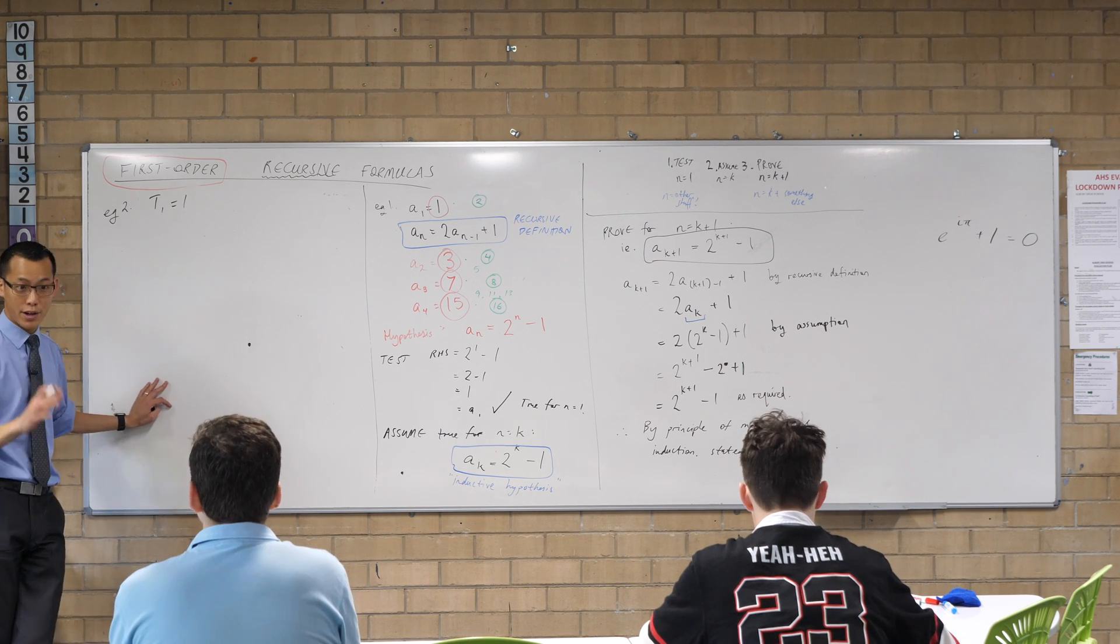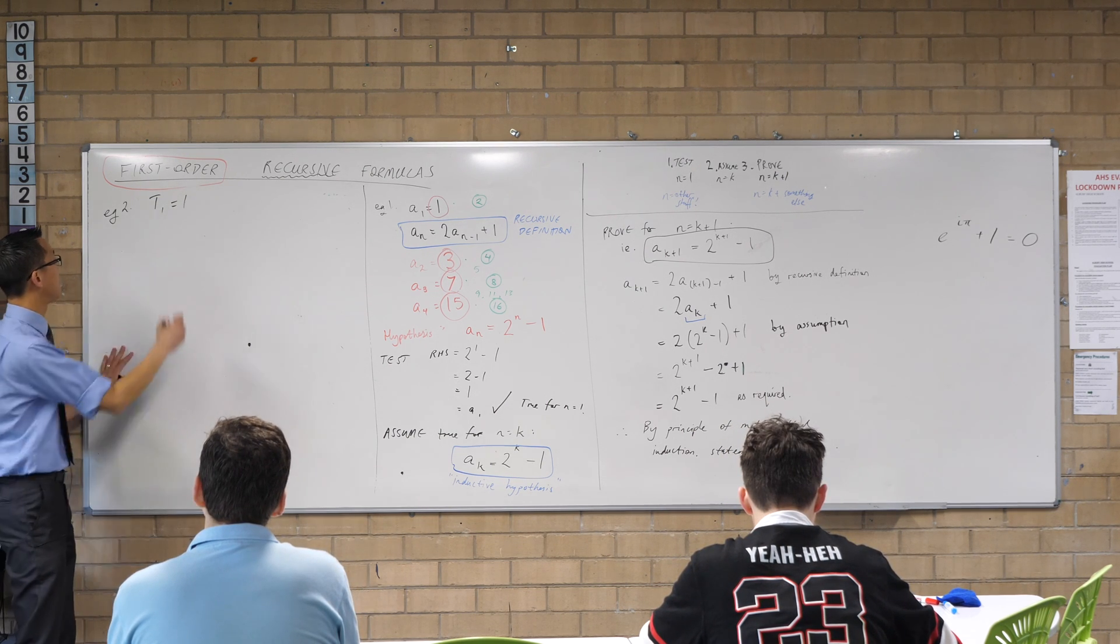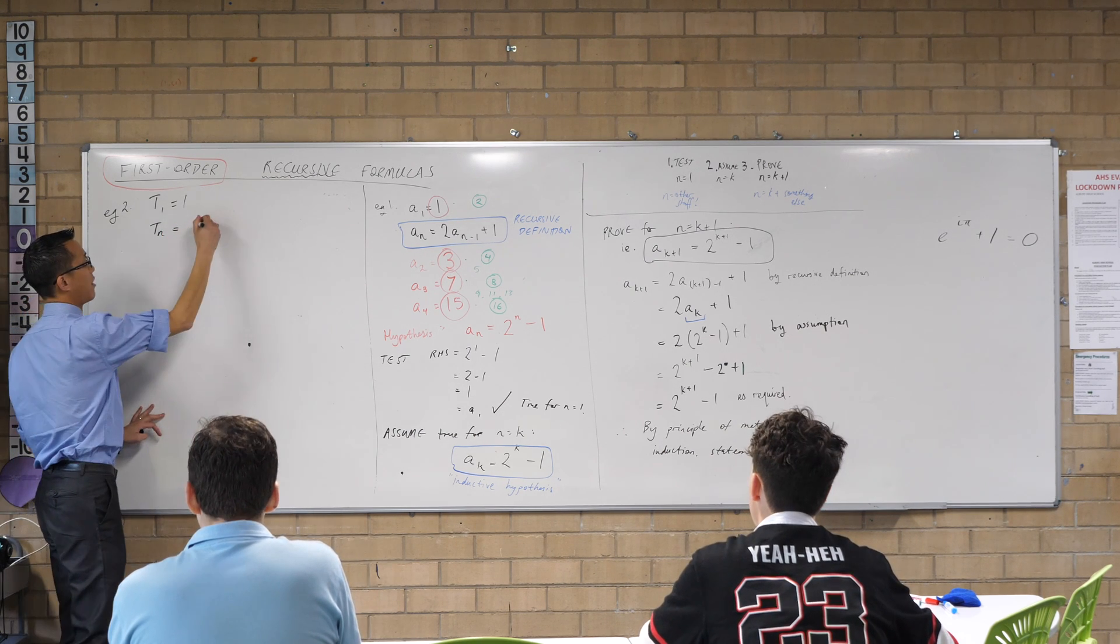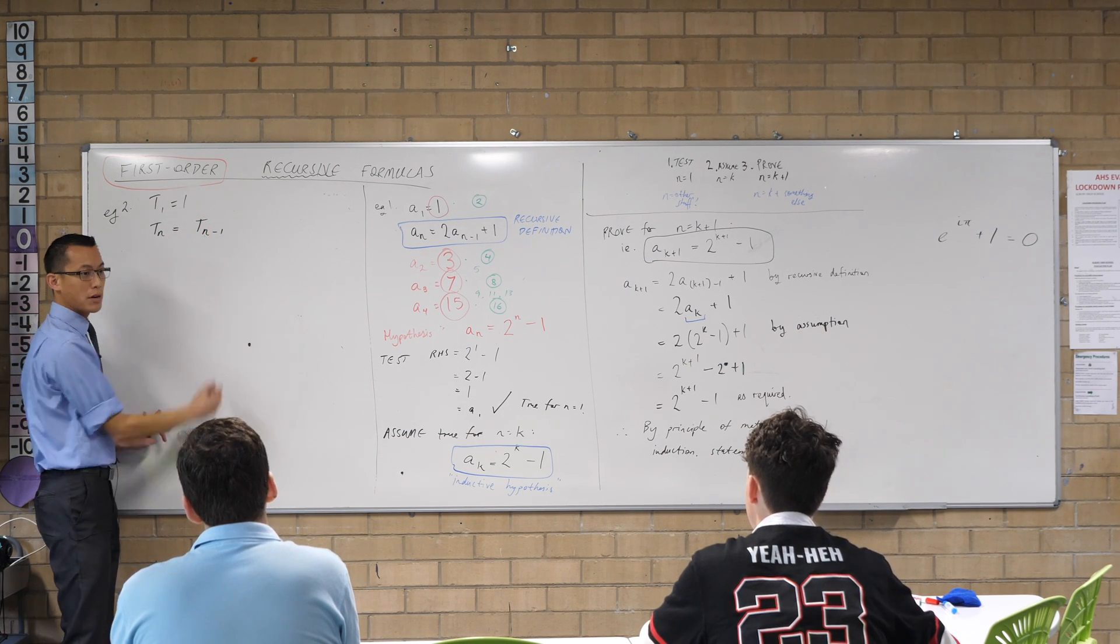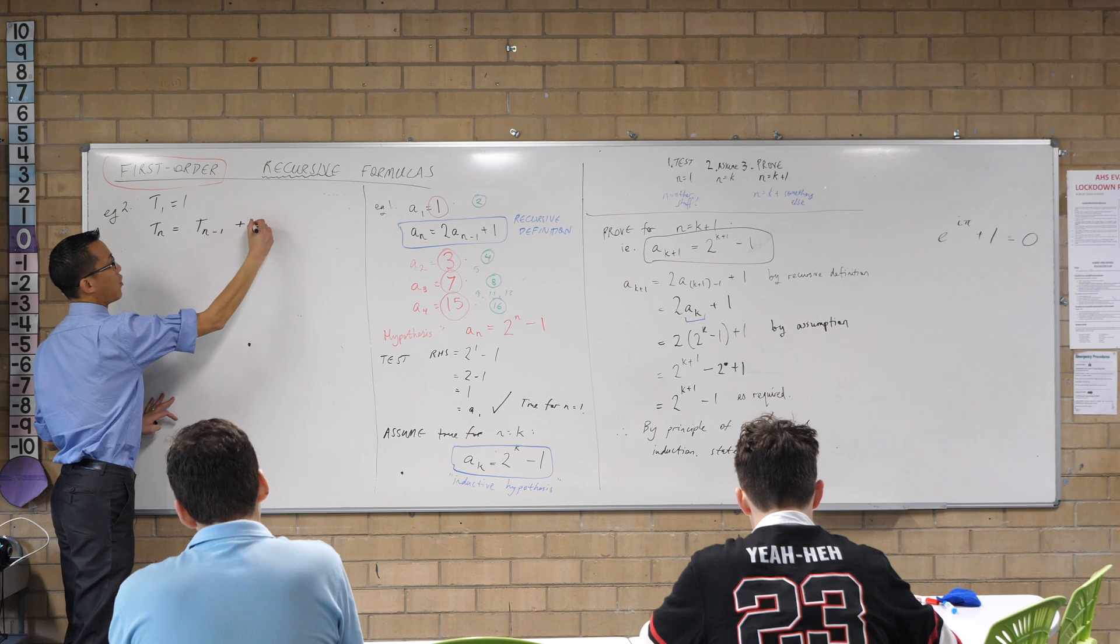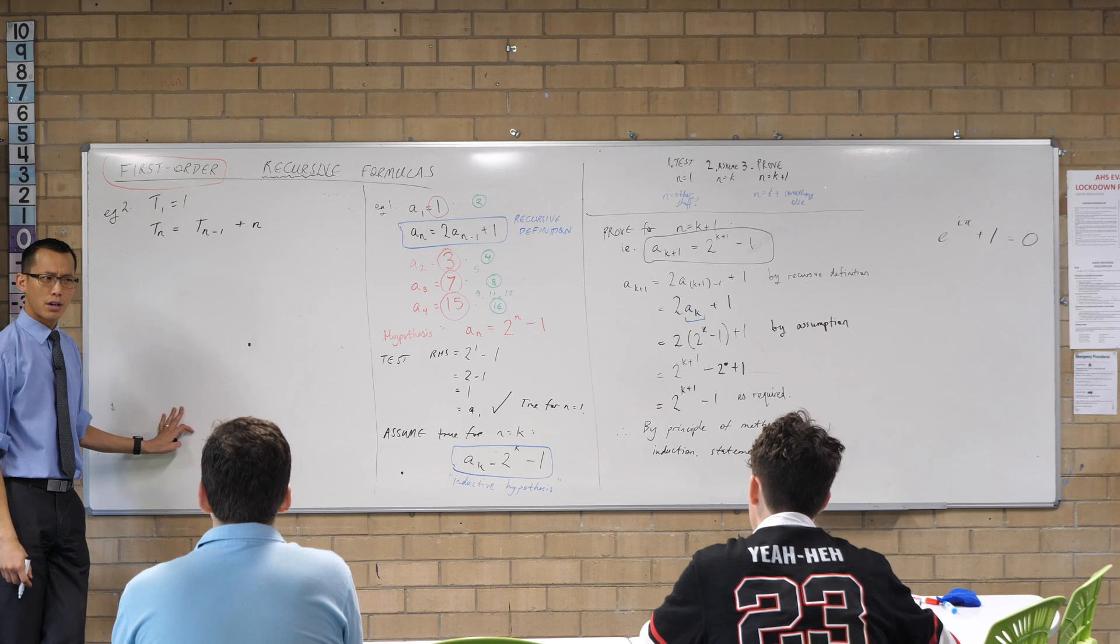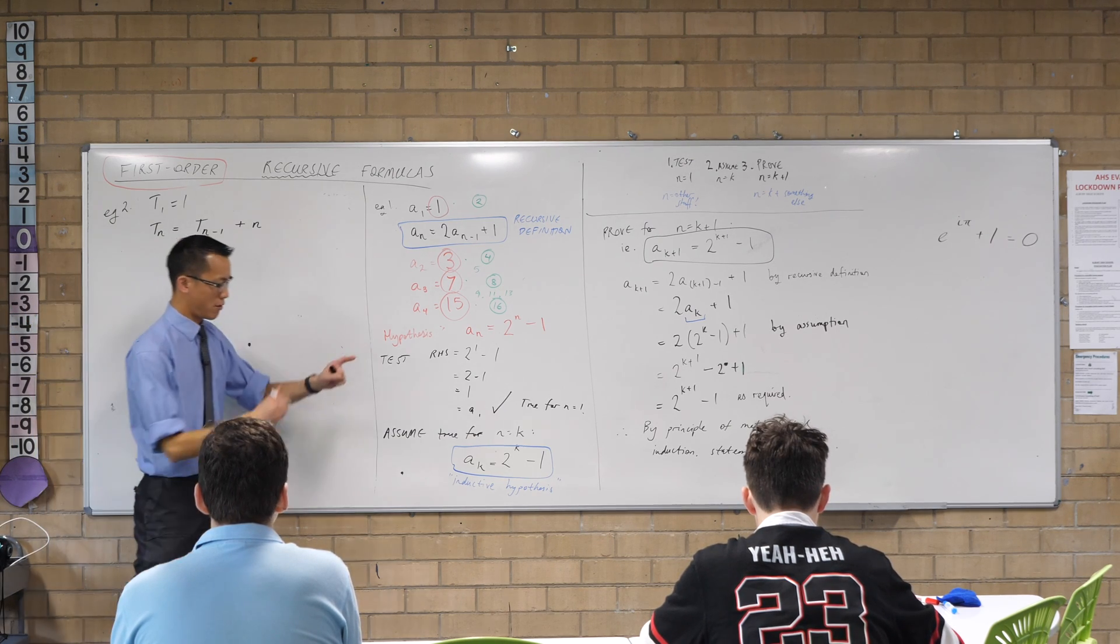So again, every recursive proof starts with something and then we've got to go, alright, how do we get to the next one? What I'm going to suggest is you look at the previous term and then add on that number of the term that you're on, just like we did before.